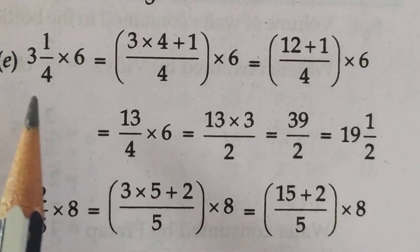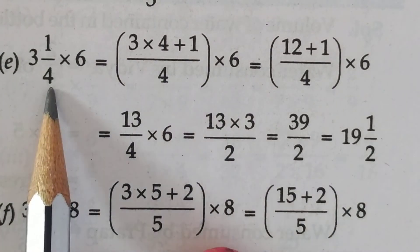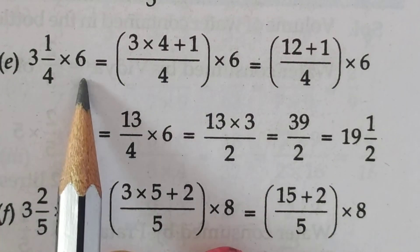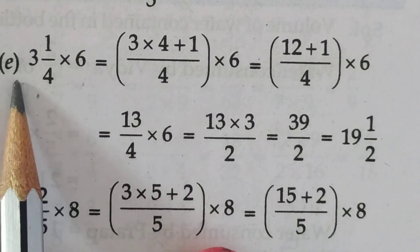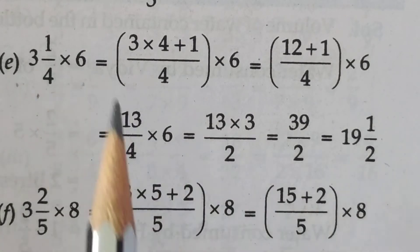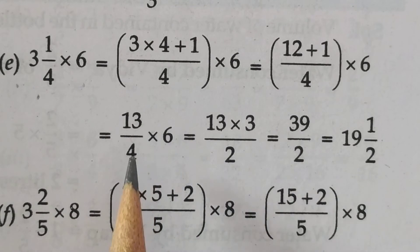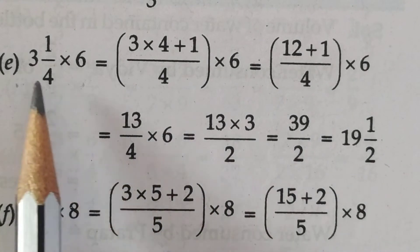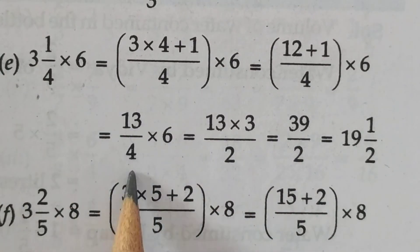Next, part (e): 3 whole 1 upon 4 multiplied by 6. Now students, convert this mixed fraction into improper fraction. 3 fours are 12, 12 plus 1 is 13. So the improper fraction is 13 upon 4. Multiply by 6.